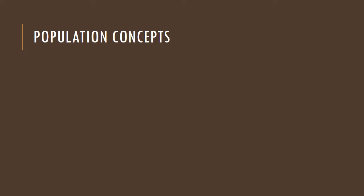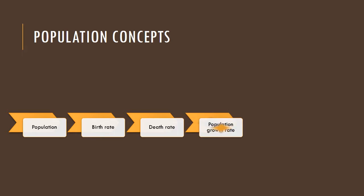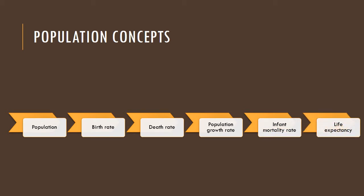For this video on population concepts, we are going to be looking into the following: one — population; two — birth rate; three — death rate; four — population growth rates; five — infant mortality rates; and six — life expectancy.